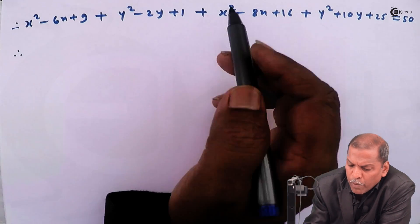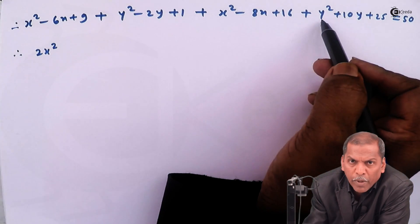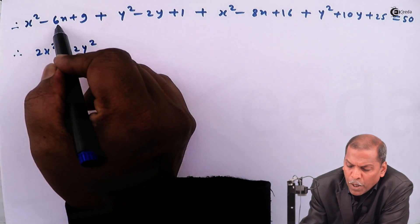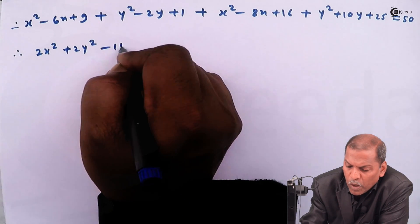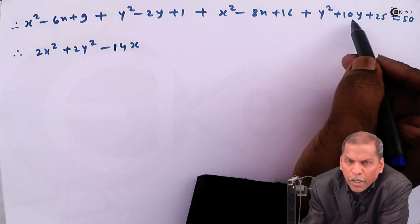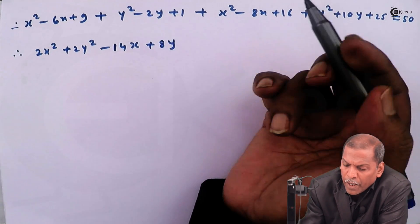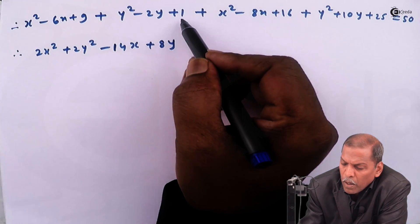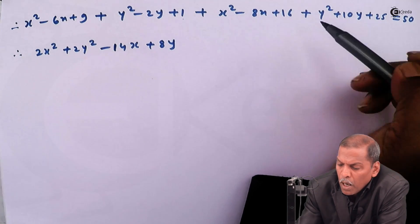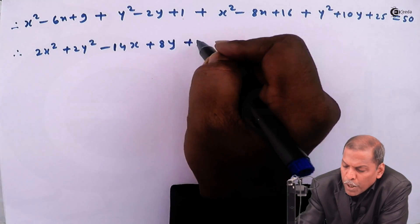Then x² plus x² gives us 2x². Then plus y² plus y² gives us plus 2y². Then -6x and -8x, that is -14x. Then -2y plus 10y, so that gives us +8y.